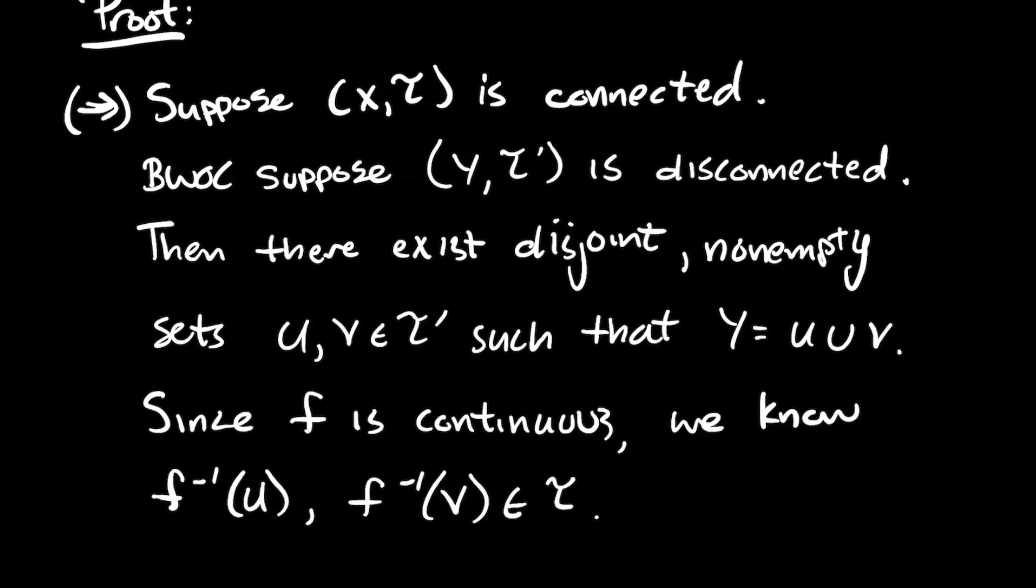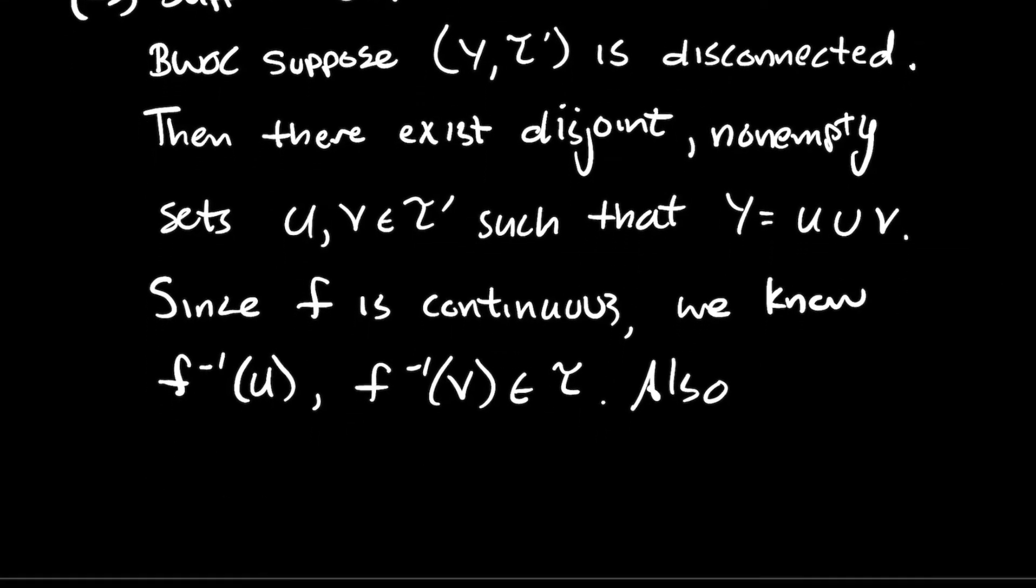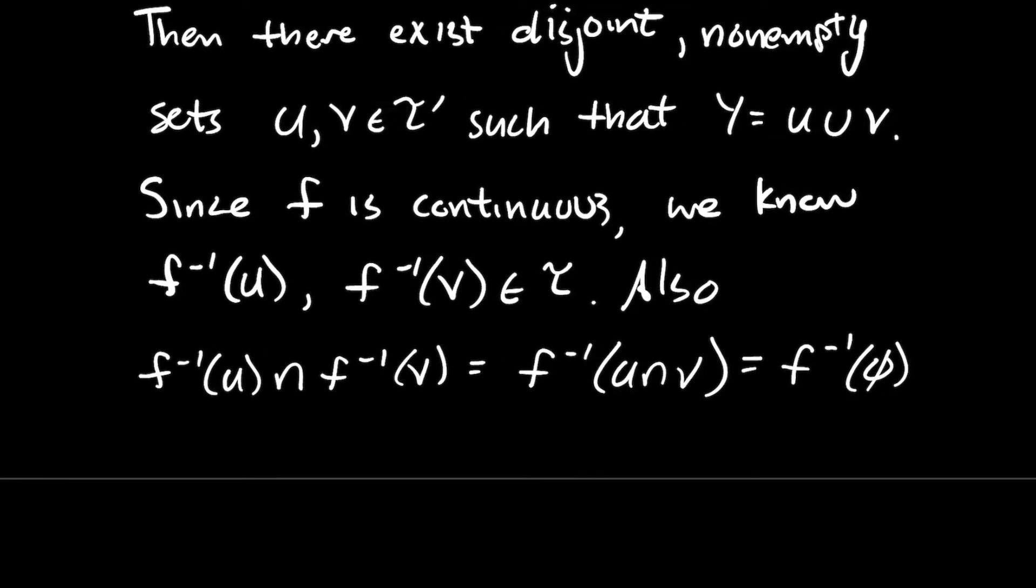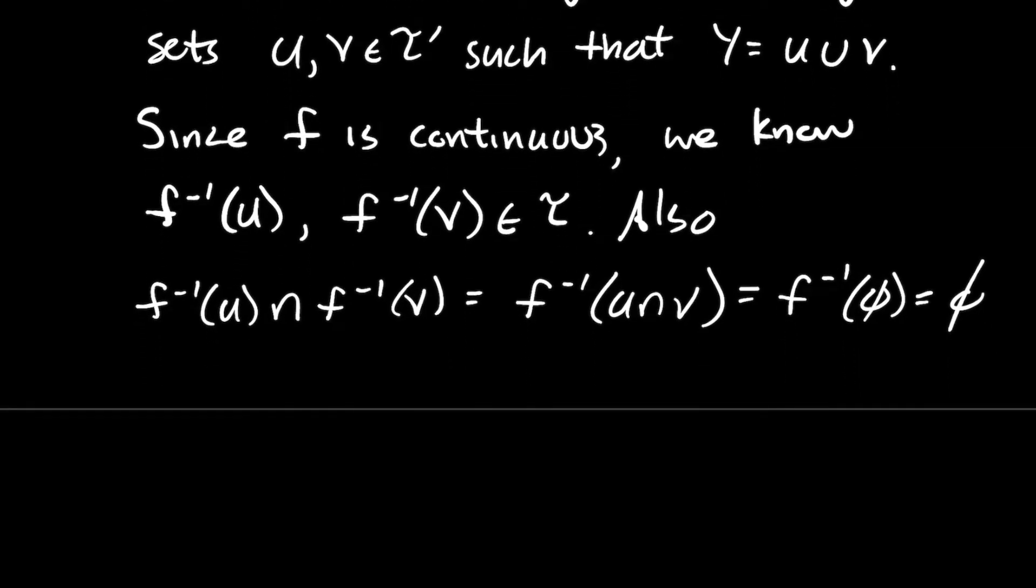Now since F is continuous, I know that the preimage of U and the preimage of V should be open sets in X. In other words, those two sets are in the topology on X, which was T. Also, I know that the preimage plays really nicely when you do intersections. So the intersection of the preimage of U with the preimage of V is the same thing as the preimage of U intersect V. So that's what I mean by preimages play really nicely. But so what do I know U intersect V is? Well, that's the empty set. And I know that the preimage of the empty set should be empty. So what does that show? That shows that the preimage of U and the preimage of V are disjoint. Those two sets are disjoint.